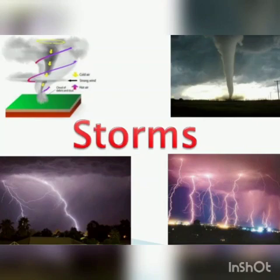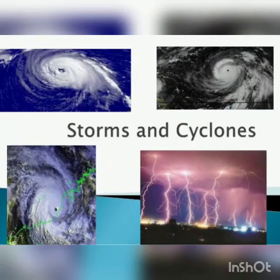And thunderstorm — a storm with thunder and lightning is called thunderstorm. Thunderstorms are associated with more heavy rainfall.